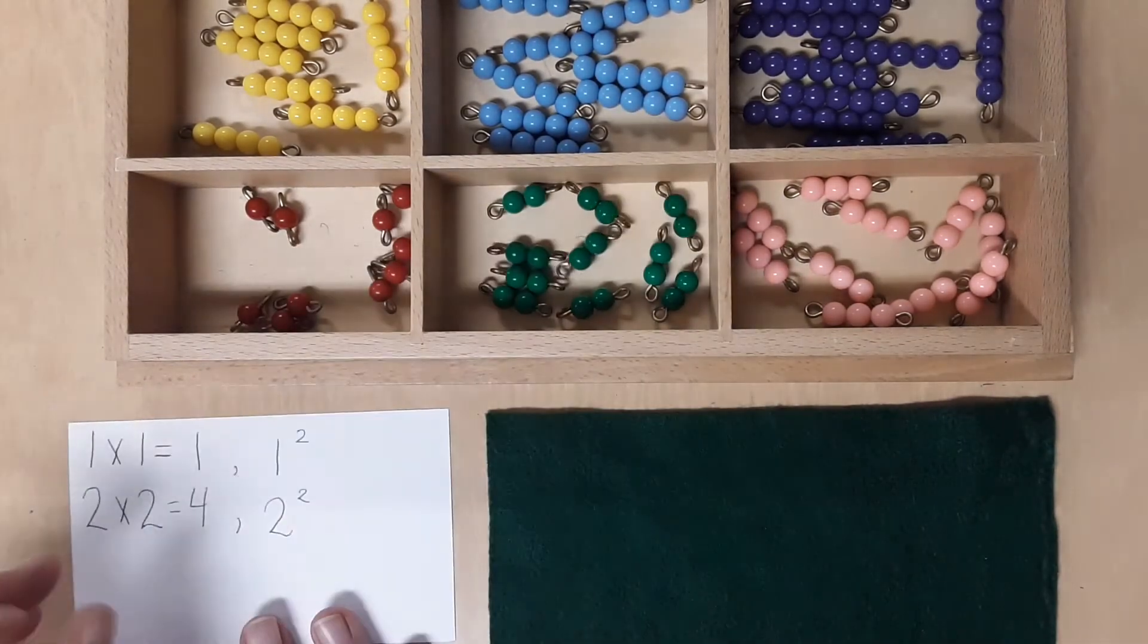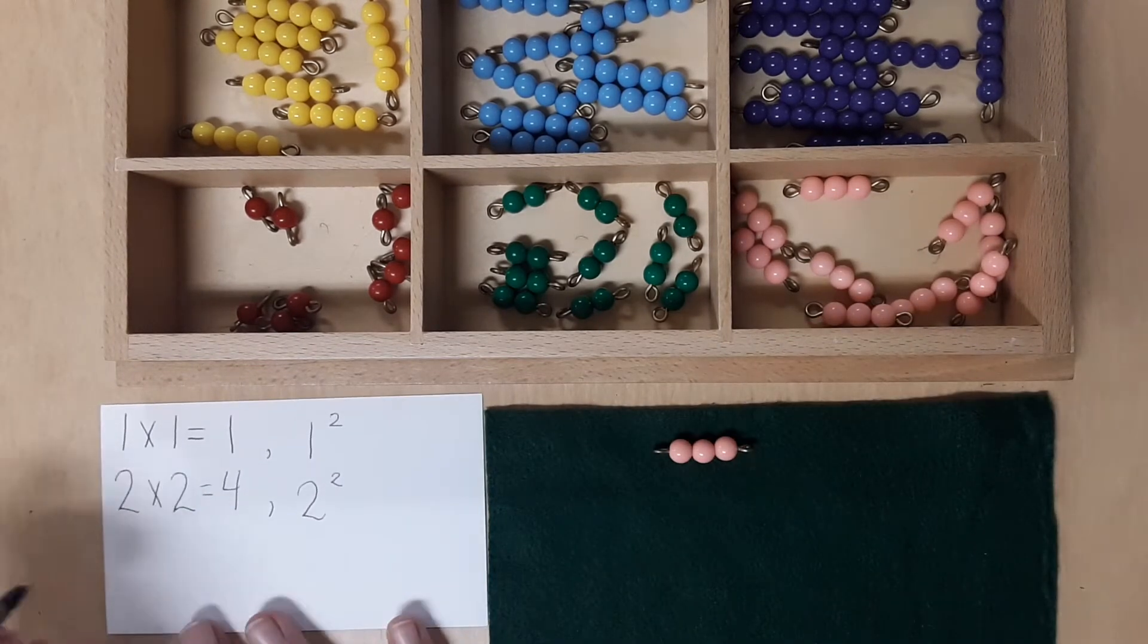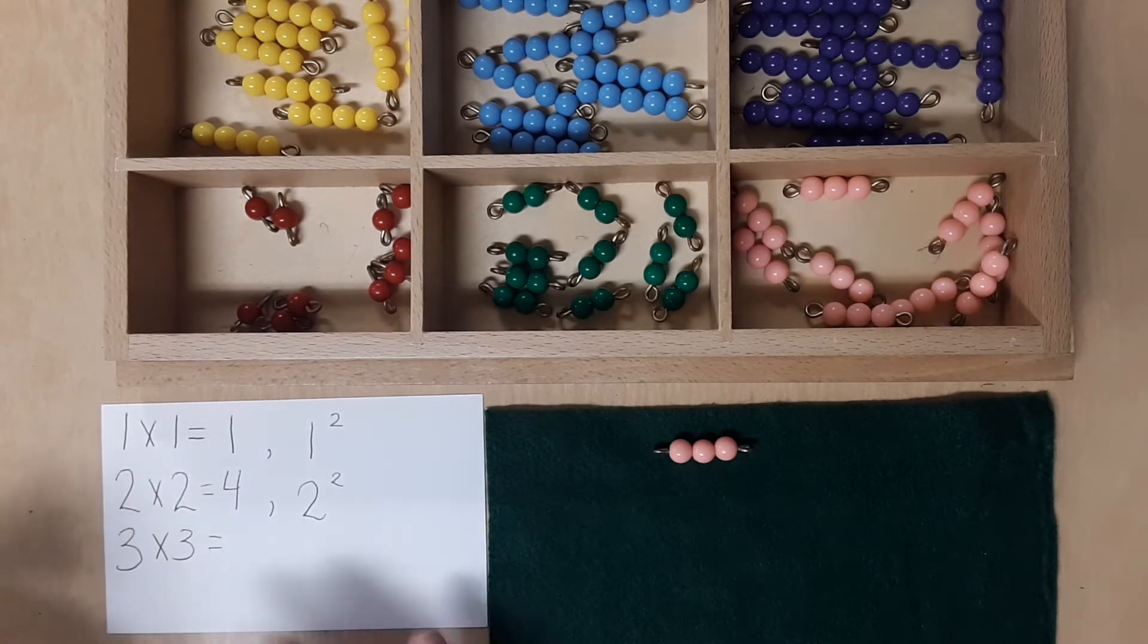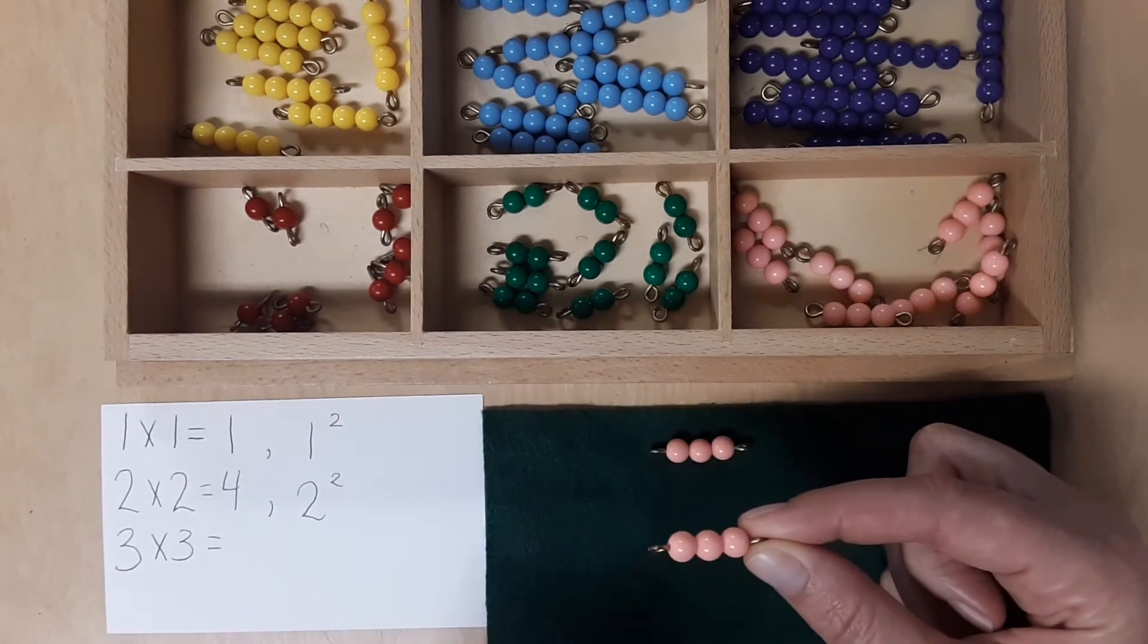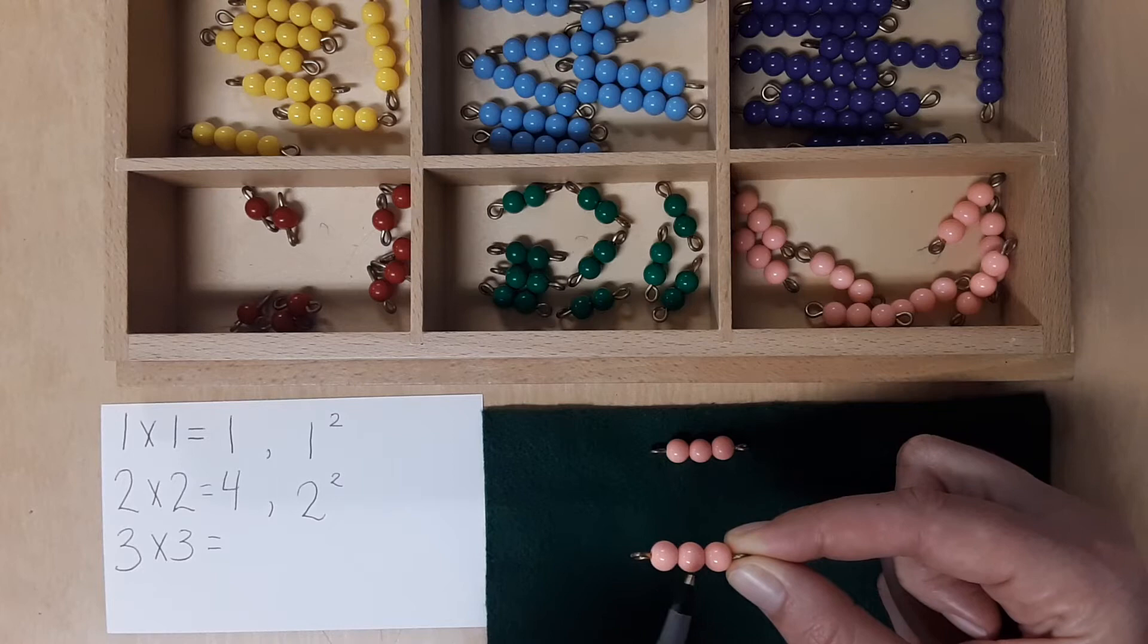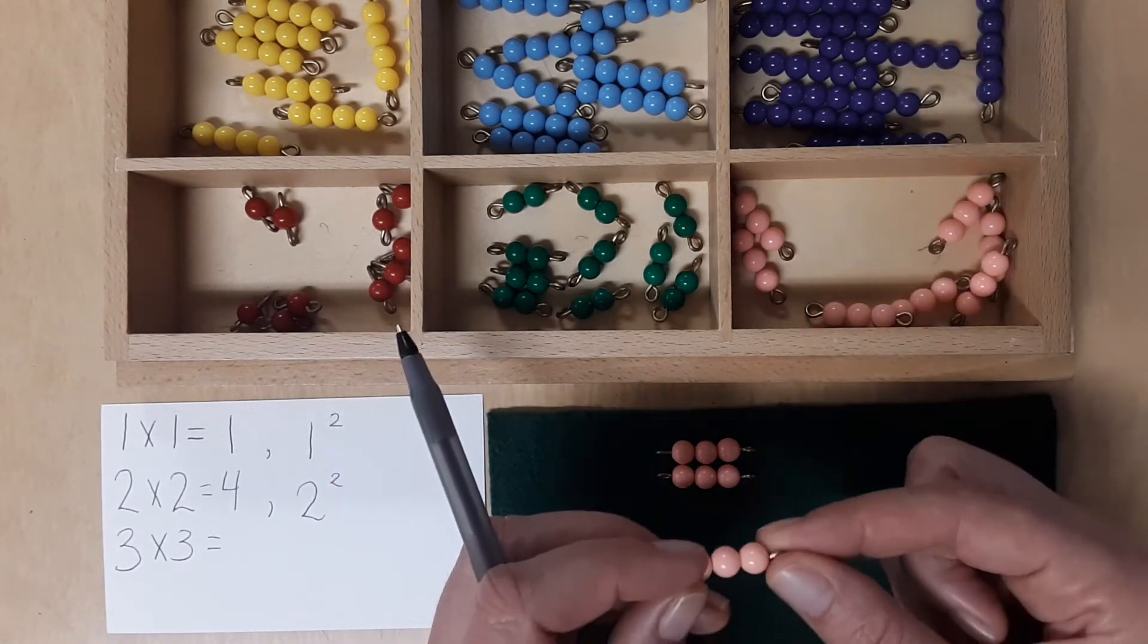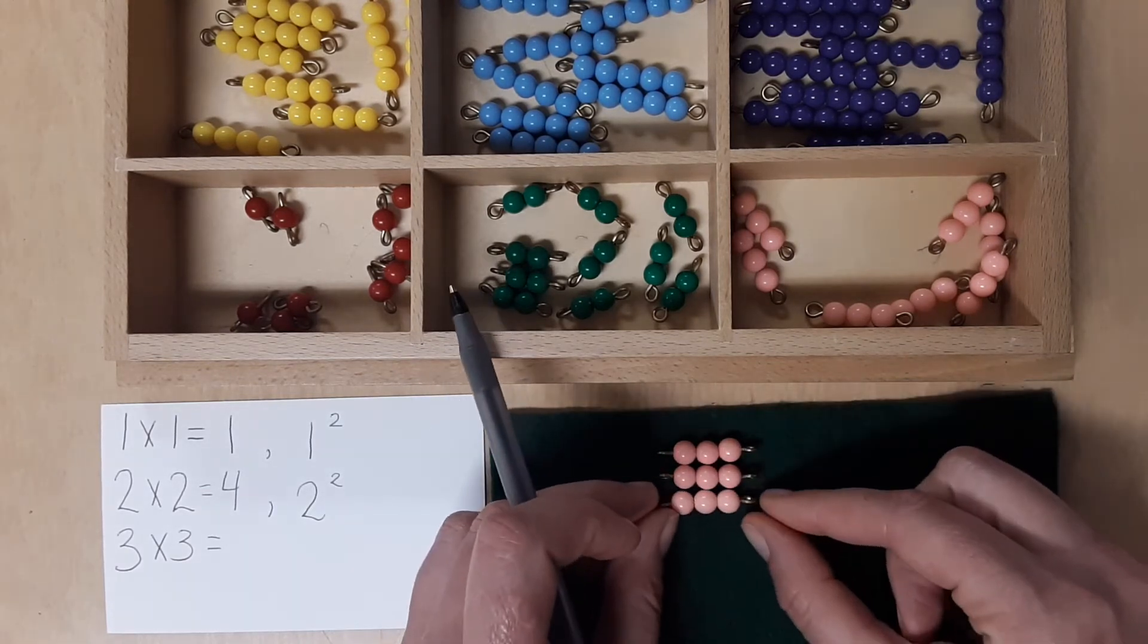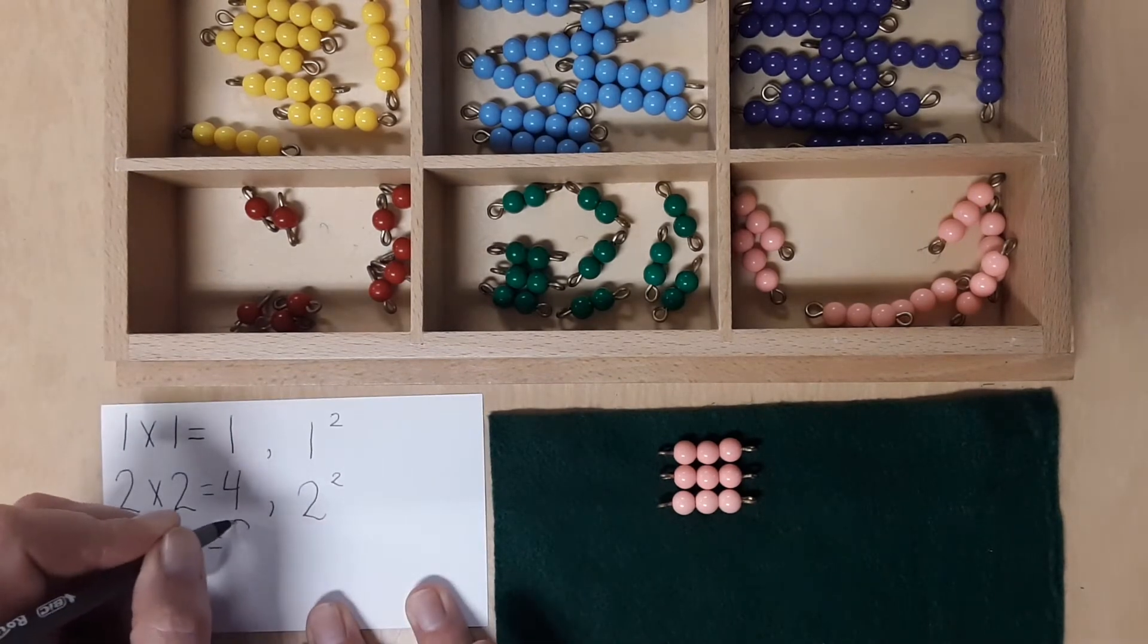Let's do another one. This time we'll do the 3's. 3 times 3 equals, here we have 3. This time I'll point and you count. Count on from 3. How much did you get? 9 is correct.